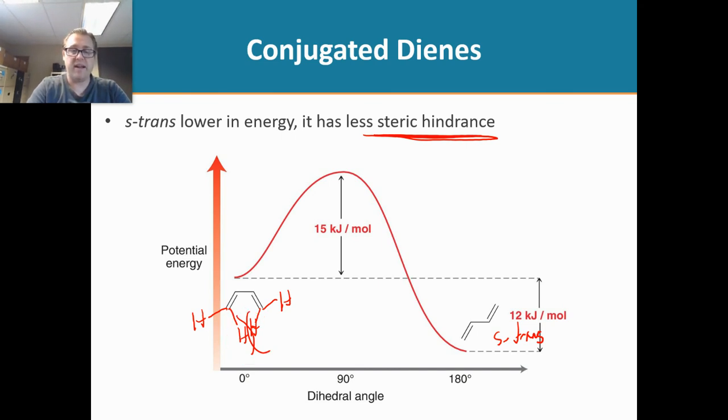So because there's some steric hindrance there, it's going to be higher in energy. And in the s-trans, there's no steric hindrance.